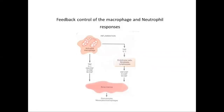The feedback control of the macrophages and neutrophil responses: whenever there is injury to the tissues and an inflammatory response occurs, there is activation of the macrophages. These activated macrophages in turn release tumor necrosis factors, interleukin-1, granulocyte-monocyte colony stimulating factors, granulocyte colony stimulating factors, and monocyte colony stimulating factors. TNF and interleukin-1 secreted by activated macrophages act on endothelial cells, fibroblasts, and lymphocytes, which in turn produce colony stimulating factors, and these act on the bone marrow to release granulocytes and monocytes.